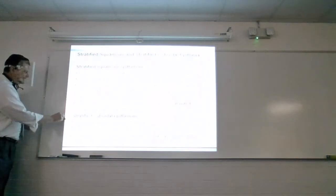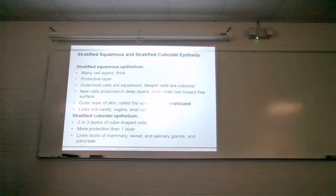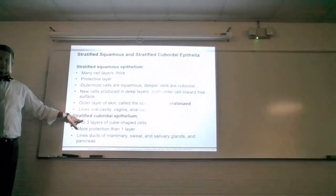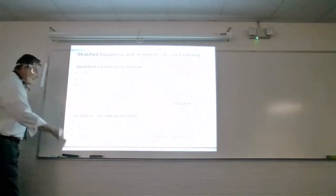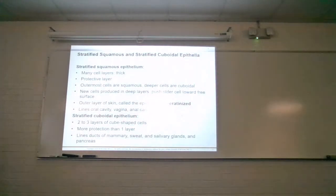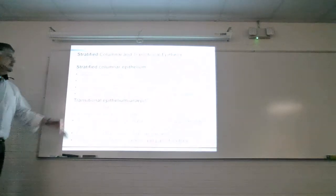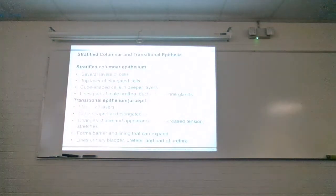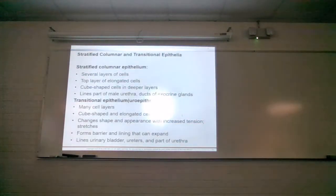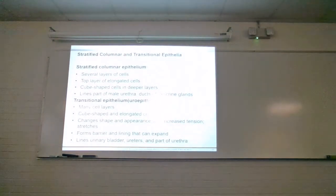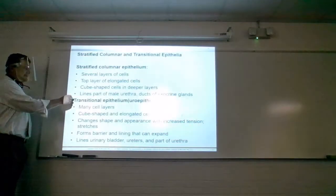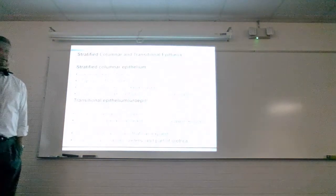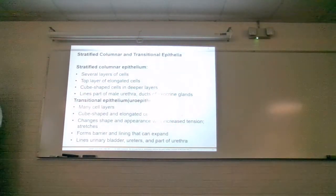We don't study stratified cuboidal or stratified columnar in lab, but they are fair game if I ask you to name a tissue that is multiple cell layers thick of cube-like or column-like cells. You don't need to know where they are — just be able to name them. Transitional epithelium is stratified but the name simply tells us cells change shape. It's found in the urinary bladder.